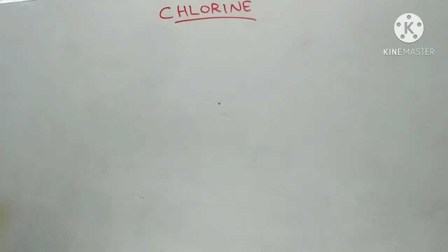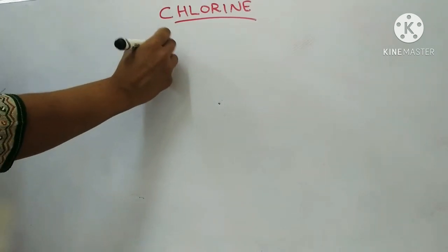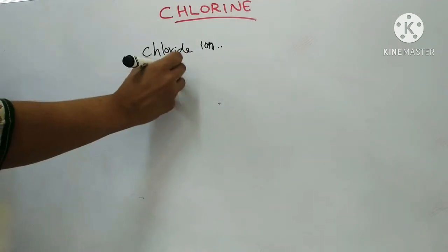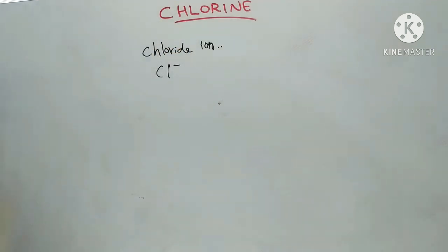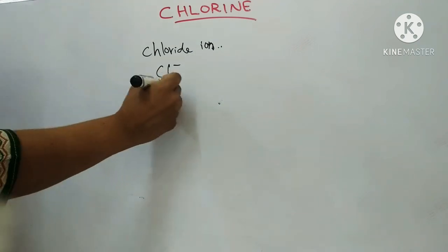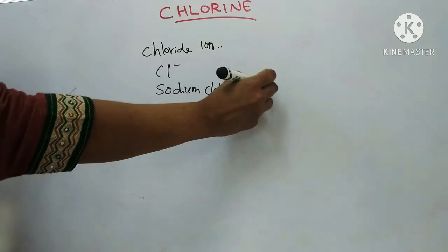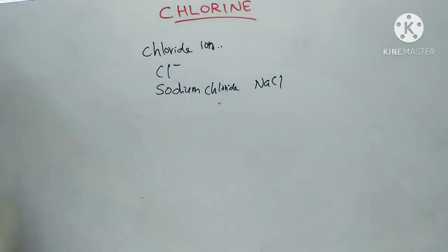Hello everyone, let's discuss about chlorine. Chlorine is present in the body as chloride ion. This chloride is taken in the diet as sodium chloride. Many vegetables and meats have small proportions of this chloride. It is also available in the chlorinated water.